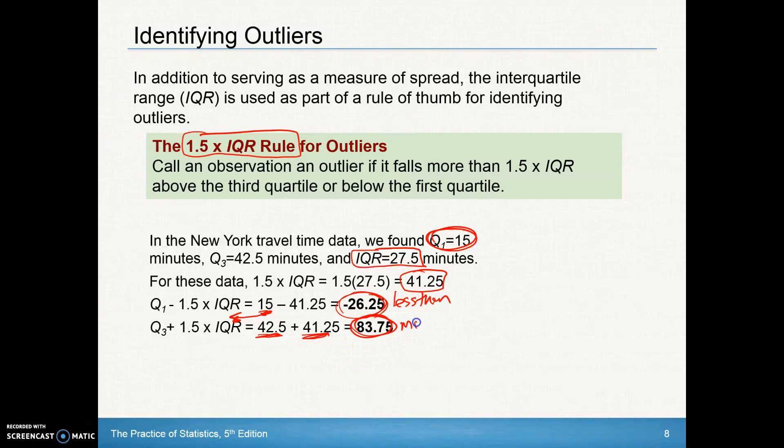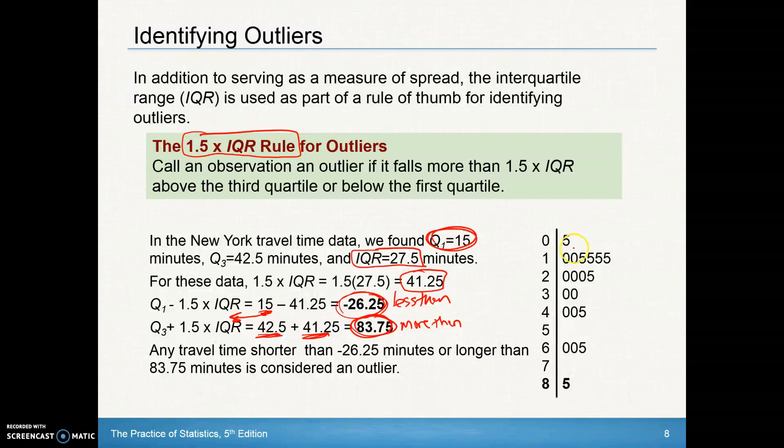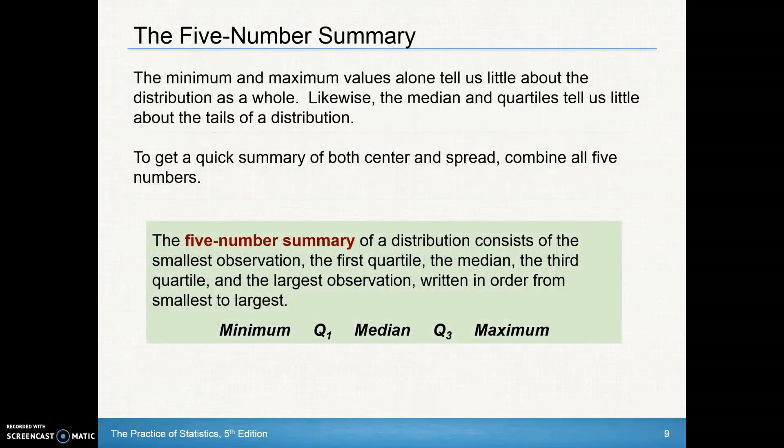We also check the Q3 side. Take Q3, which was 42.5, and add 41.25 to get 83.75. We look for any values more than 83.75 on our list, and if there are, those would officially become outliers. The lowest value is 5, and we do have a value at 85 that is larger than Q3 plus 1.5 IQR. This 85 is officially an outlier because it is more than 1.5 times the IQR away from Q3.